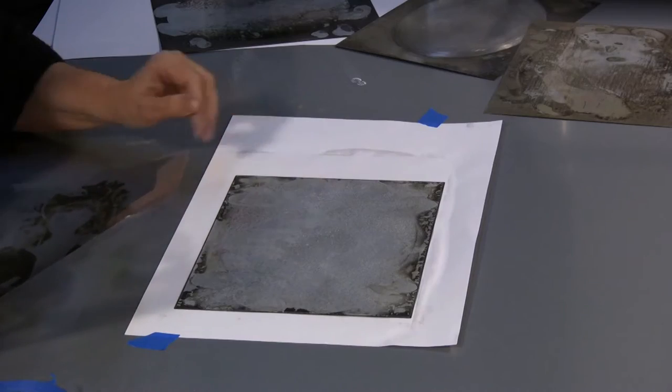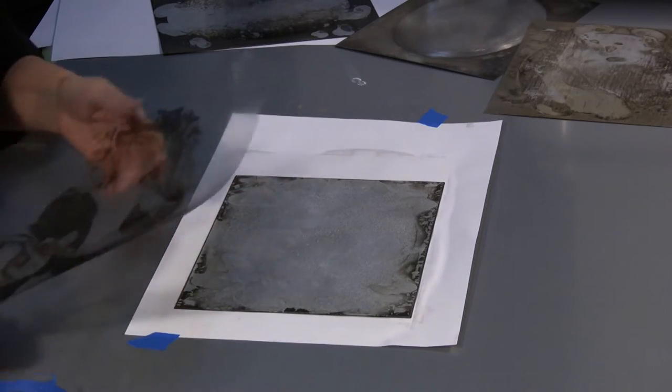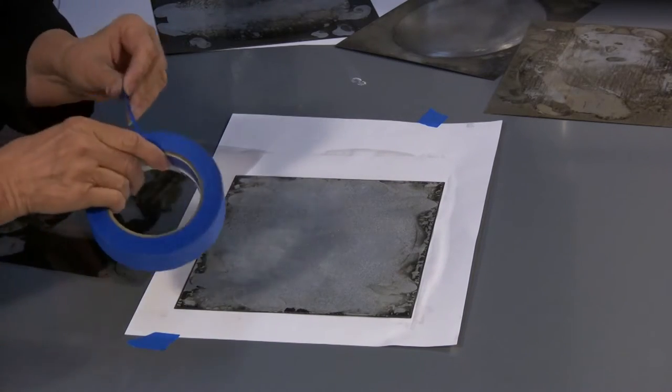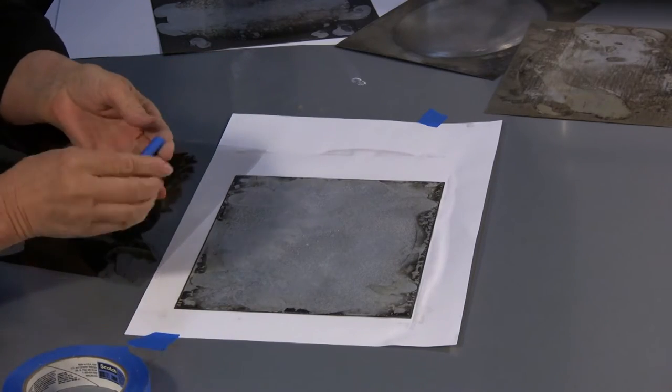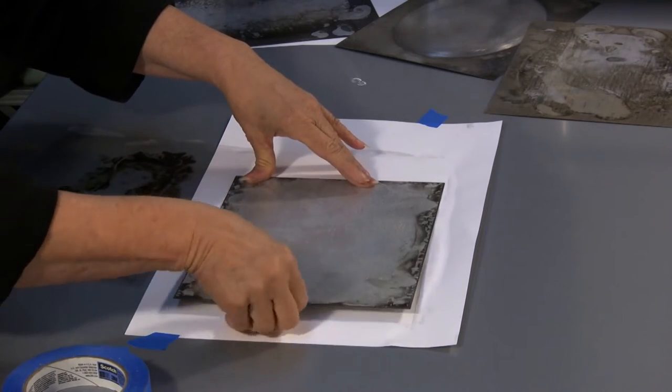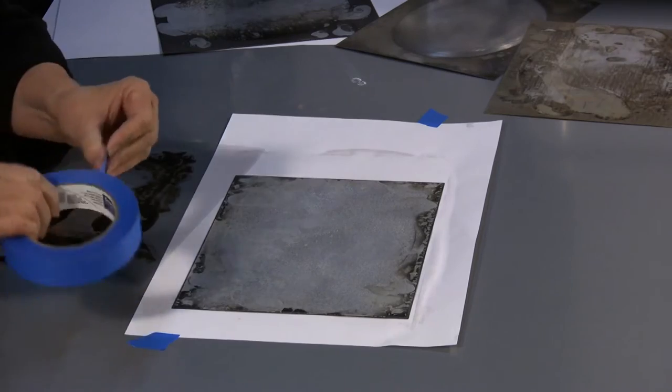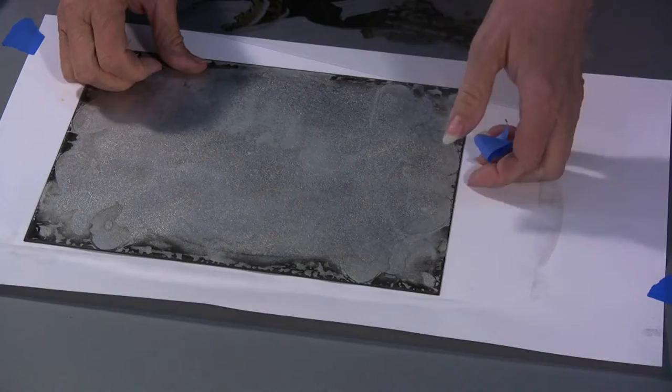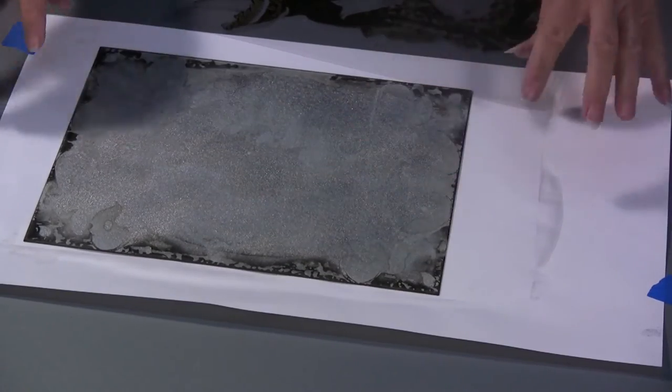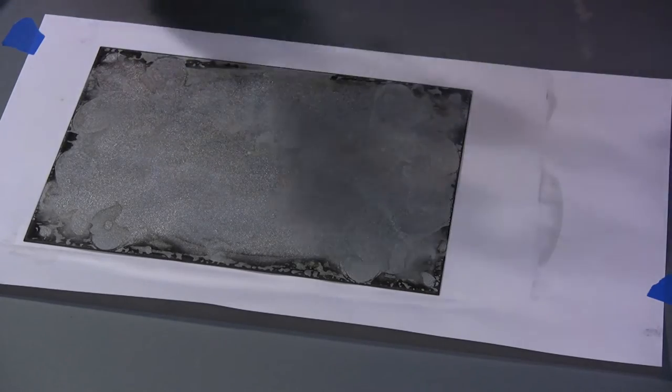What you're going to do is place your plate, after it's prepared and cleaned, on the table. Then you're going to use a piece of tape to hold it in place and another piece on the other side. You're going to have an absorbent paper underneath it.